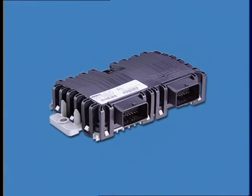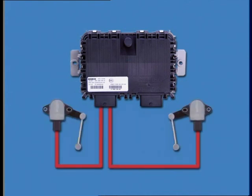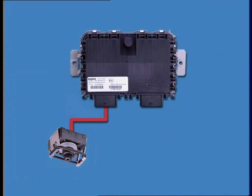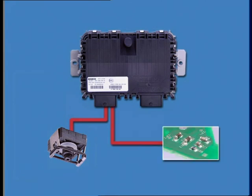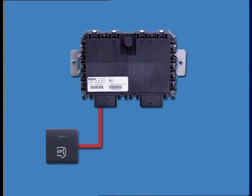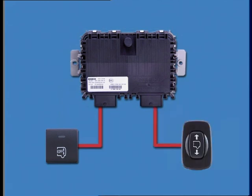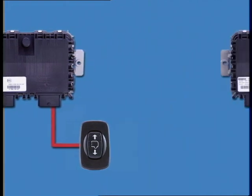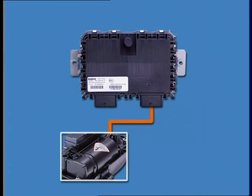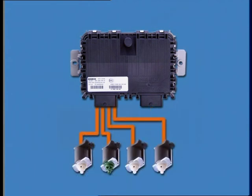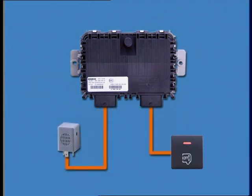The ECU controls the system. It receives hard-wired data concerning the left-hand and right-hand body heights, circuit pressure, compressor temperature, system inhibit requests, and manual requests to raise or lower the vehicle. It activates the compressor, the solenoids, the buzzer, and the inhibit switch light by a hard-wired signal.